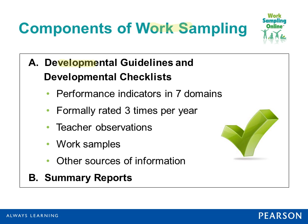Your developmental checklist will provide performance indicators or learning goals. You'll use the developmental checklist in conjunction with evidence — including teacher observations, work samples, and other sources of information — to formally rate the child's learning, skills, knowledge, and behavior in seven domains. You'll do that three times per year, and all ratings from the developmental checklist will be summarized in a summary report.